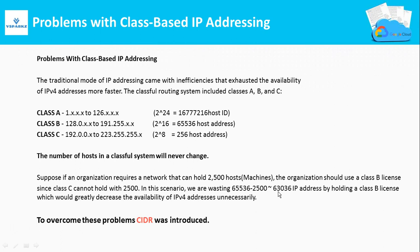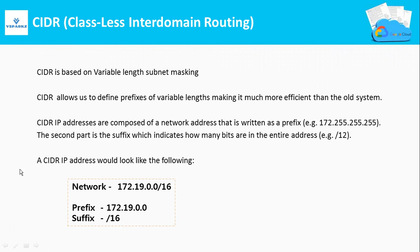To overcome this problem, CIDR was introduced. CIDR stands for Classless Inter-Domain Routing. In classful routing the subnet ranges are fixed, but in CIDR the subnet range values are not fixed. CIDR is based on variable-length subnet masking, which allows us to define prefixes of variable lengths, making it much more efficient. A CIDR IP address is composed of a network address written as a prefix, and a suffix indicating how many bits are in the address — for example, a typical CIDR IP address looks like the one shown here.